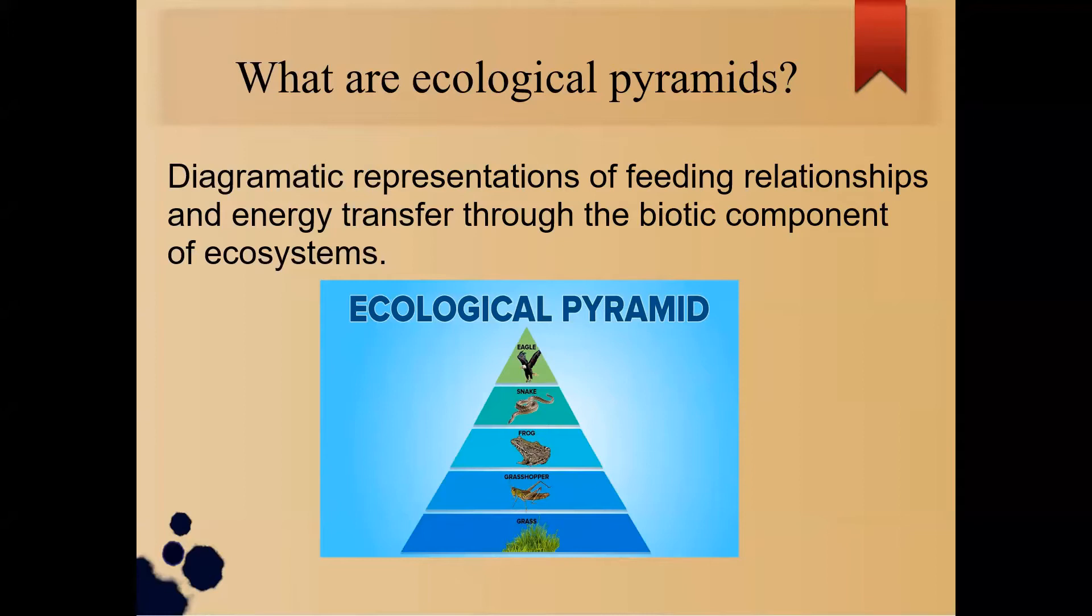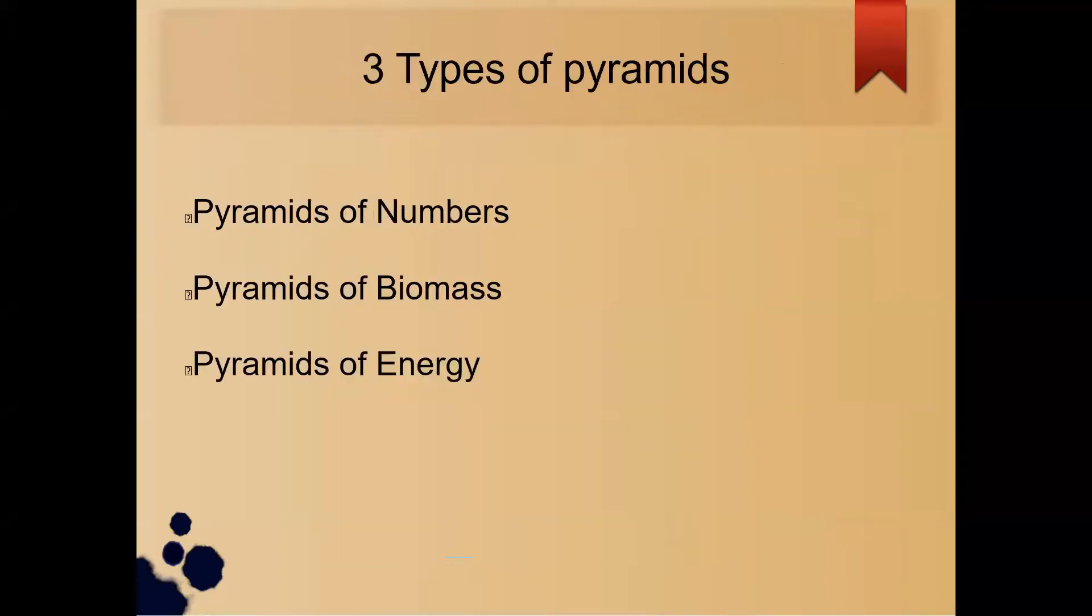and energy transfer through the biotic component of ecosystems. There are three types of pyramid. The first one is pyramid of number, the second one is pyramid of biomass, and the last one is pyramid of energy.